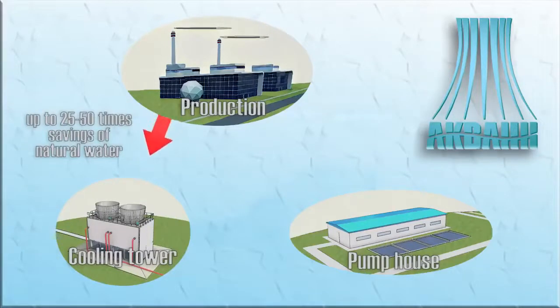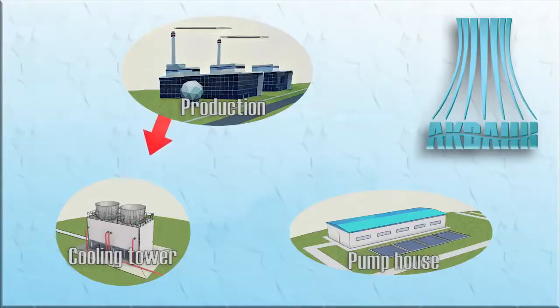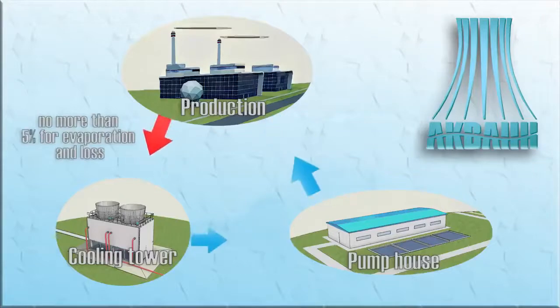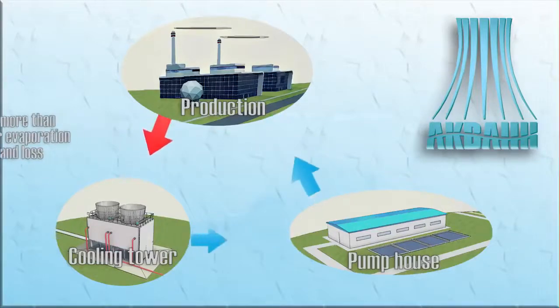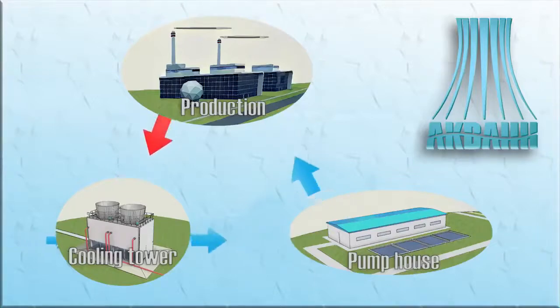After cooling, the main volume of recycled water is fed back into the process cycle. Usually no more than 5% of water is lost to evaporation, drip loss, leakage, and discharge into a blowdown system. Losses are replenished by freshwater makeup.